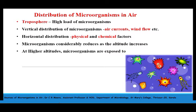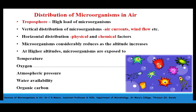The distribution of microorganisms considerably reduces as the altitude increases. At higher altitudes, the microorganisms are exposed to decrease in temperature, less oxygen content, low atmospheric pressure, low water availability, and less organic carbon, which will limit their distribution. These conditions limit the distribution of microorganisms above the troposphere layer of Earth. Only very few organisms are seen in the lower layers of stratosphere — only resistant spores are found above the troposphere layer, but only in very low concentrations.